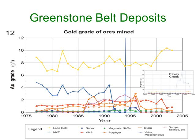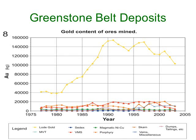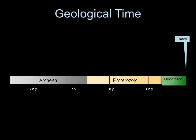How significant are these greenstone belt shear-zone hosted gold deposits? This graph shows the gold grades of various deposit types being mined in Canada. Greenstone shear-zone hosted gold deposits, shown in yellow, tend to grade between 7 and 10 grams per tonne — well above most other deposit types. In a world where grade is king, this is important. The vast majority of gold mined each year in Canada is derived from greenstone belt shear-zone hosted gold deposits, and even globally they are major contributors to annual gold production.